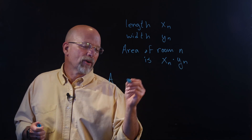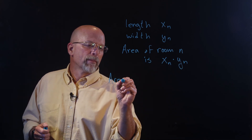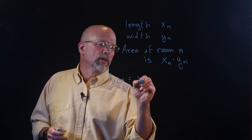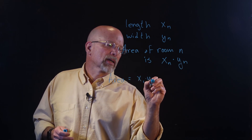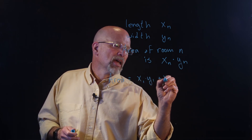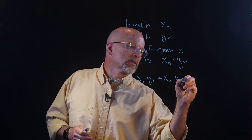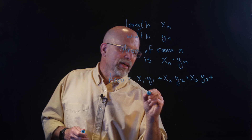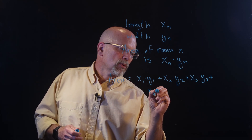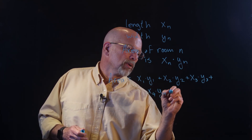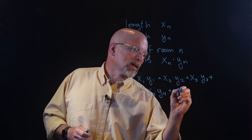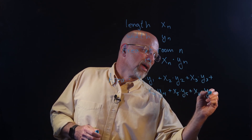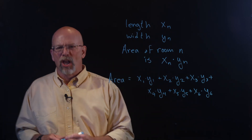Maybe a better word for area would be the square footage. The area is equal to x sub 1 times y sub 1 plus x sub 2 times y sub 2 plus x sub 3 times y sub 3 plus x sub 4 times y sub 4 plus x sub 5 times — I know I sure am tired of this — all the way up to y sub 6.